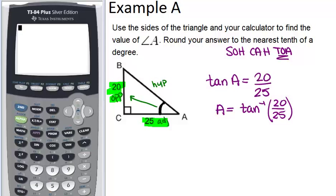So now we go over to the calculator. Usually to get your inverse functions, you have to push the second button and then tan. So we see the little negative one, that's our inverse. Then we plug in 20 divided by 25 and close the parentheses and click enter.